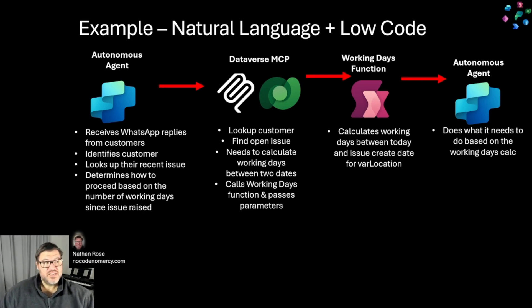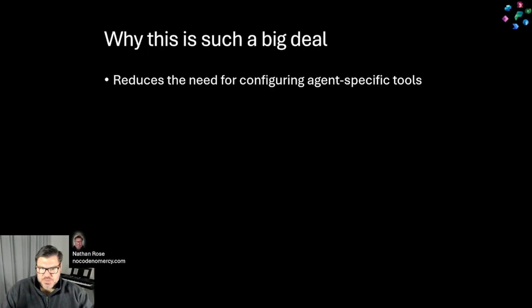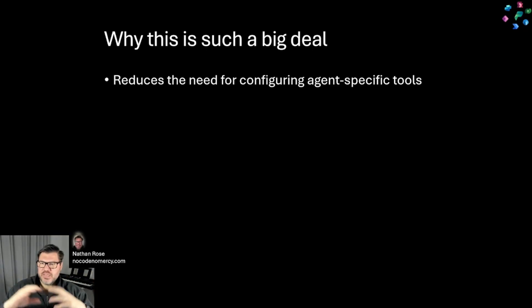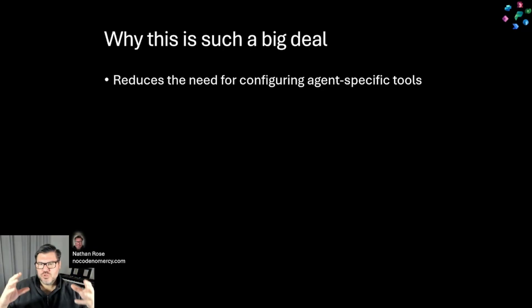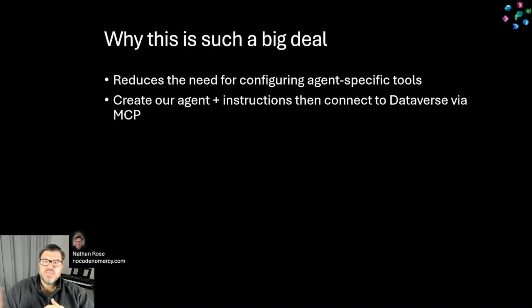Why is this such a big deal? Well, firstly, this reduces the need to configure agent-specific tools. Traditionally in Copilot Studio, tools have been agent-bound. That is changing with things like agent flows, but here we don't have to create a bunch of tools for the agent. We simply create our agent, add instructions, connect to Dataverse MCP, and we're away — it handles the rest for us.